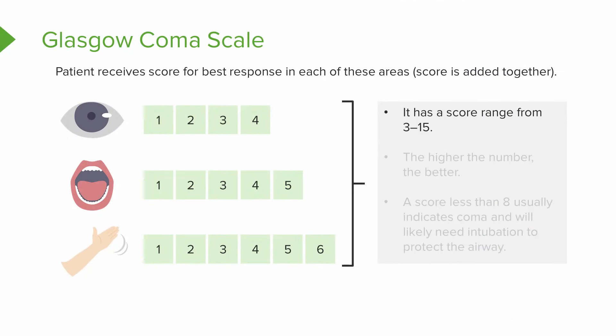The Glasgow Coma Scale has a range from 3 to 15. If you gave a score of one in each area that would be a total of three, and if you added four, five, and six together, that would be 15. The higher the number, the better. That's why I say if you get all ones, that's really good in golf — not very good in the Glasgow Coma Scale.